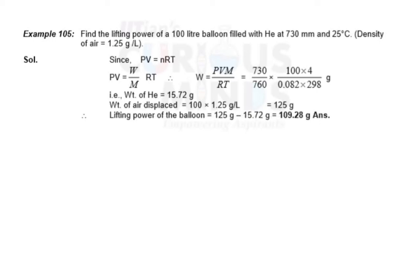What's up guys, let us solve this problem. Find the lifting power of a 100 liter balloon filled with helium at 730 millimeter of Hg and 25 degree Celsius. The density of air is 1.25 gram per liter. So lifting power is nothing but same as payload - you should know this.